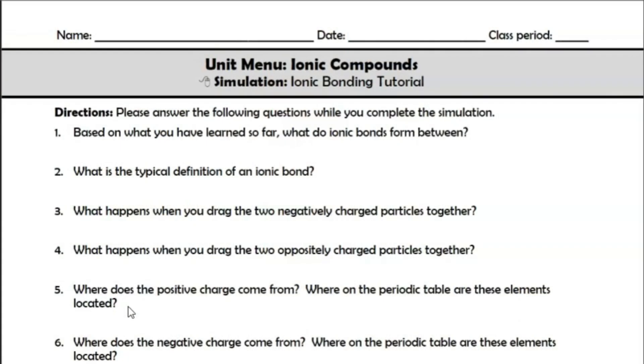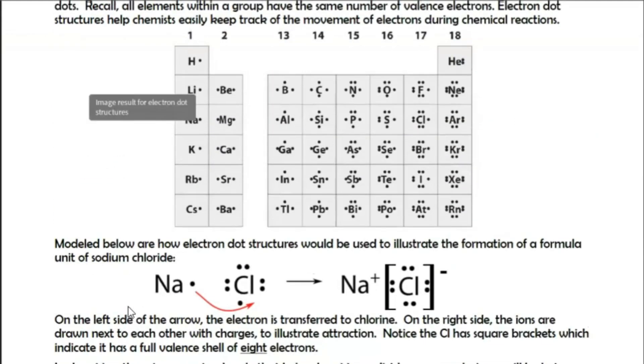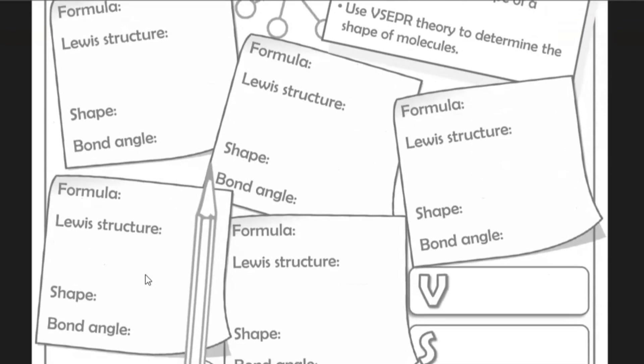You may ask how I hold students accountable for what they're learning in a simulation. The answer is I create question sheets — or doodle notes guides. This is my ionic bonding tutorial question sheet: I wrote questions based on what I wanted to tease out from the simulation, provided a space for students to draw an explanatory model, review ionic radius trends, and then model electron configurations. For the molecular shapes tutorial I created a doodle notes guide with blank spaces for students to construct notes, write down molecules, and capture the important things I wanted them to take away.